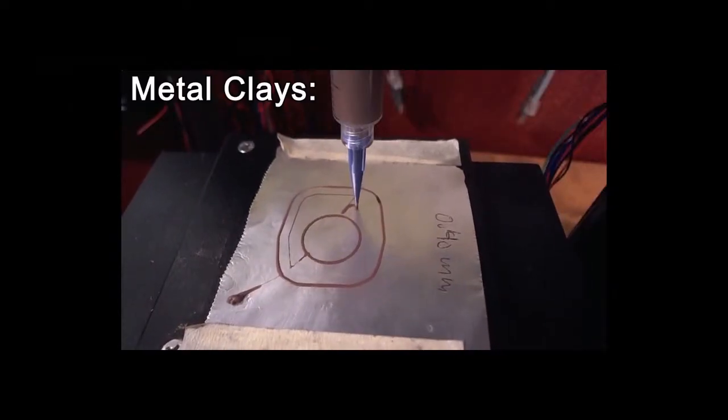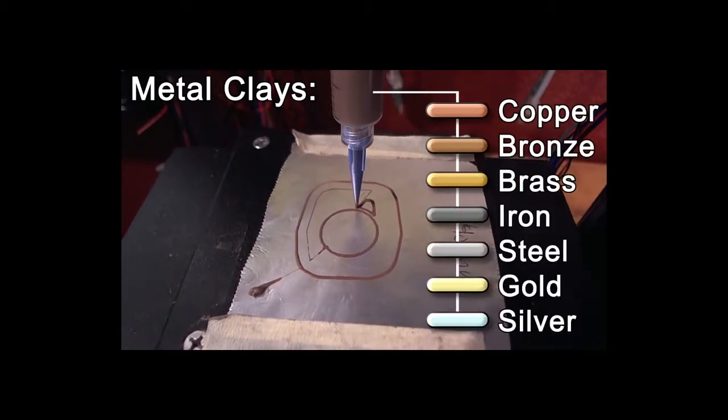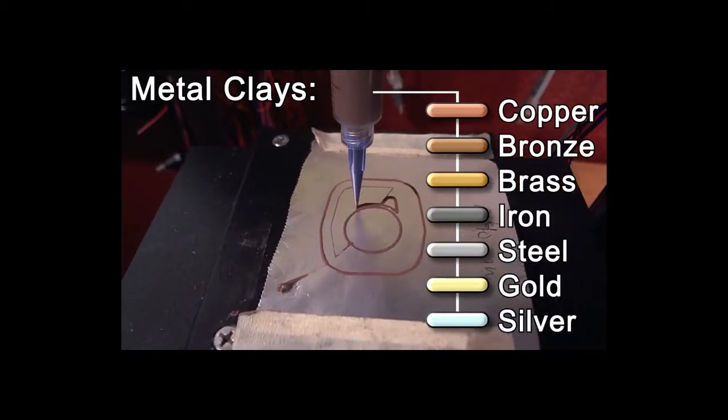Metal clays are available in a whole range of metals, including copper, bronze, brass, iron, steel, gold and silver.